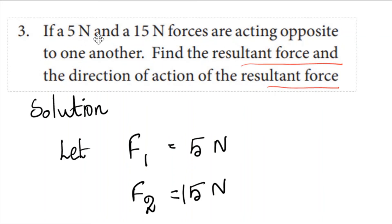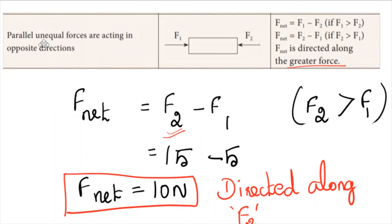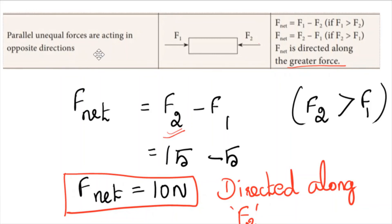Next question — a problem: If 5N and 15N forces act opposite to one another, find the resultant force and its direction. Let F1 equal 5N and F2 equal 15N. Since they act in opposite directions, we subtract: F2 minus F1, which is 15 minus 5 equals 10N. The resultant force is 10N. For direction, F2 is greater, so the net force is directed along F2.